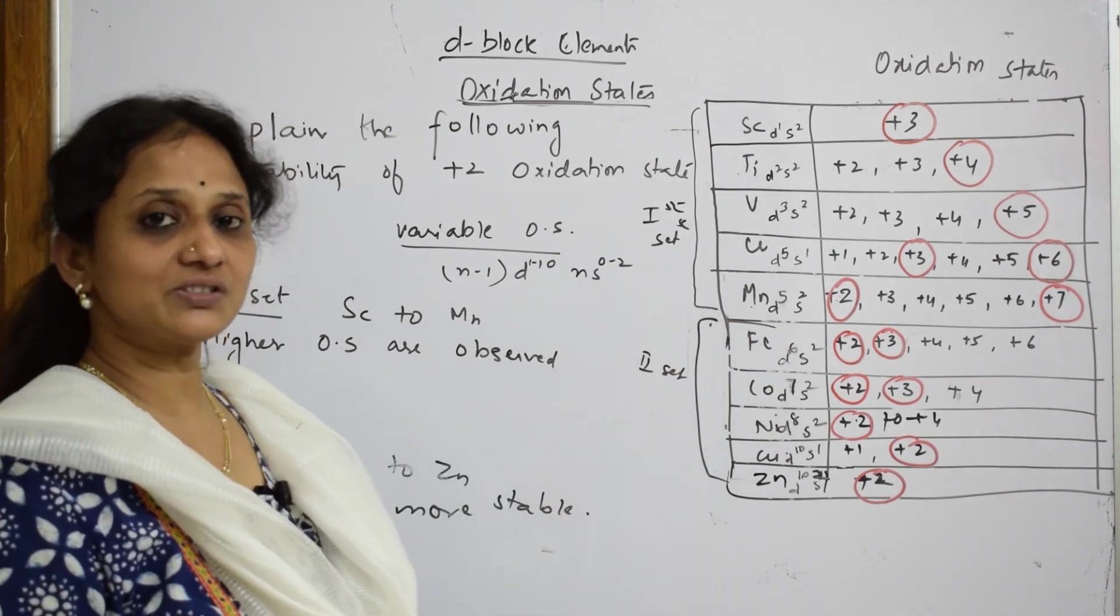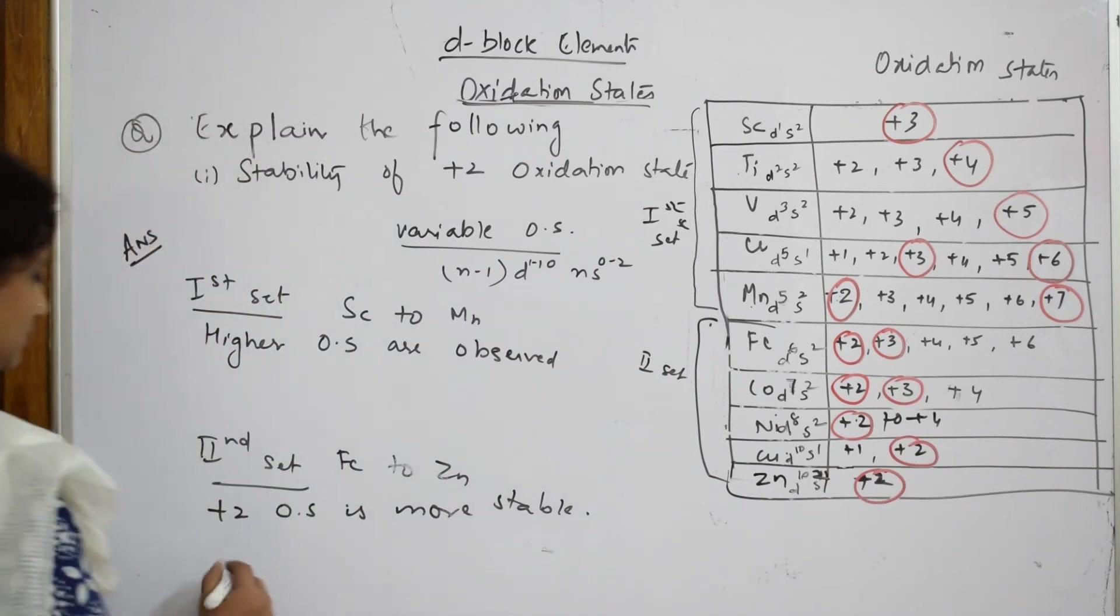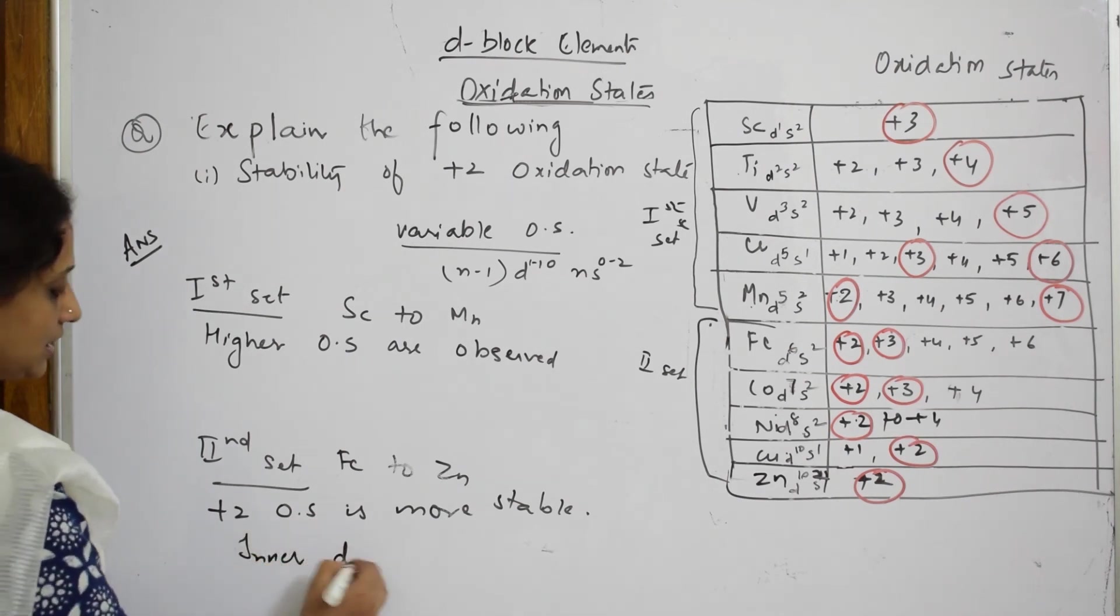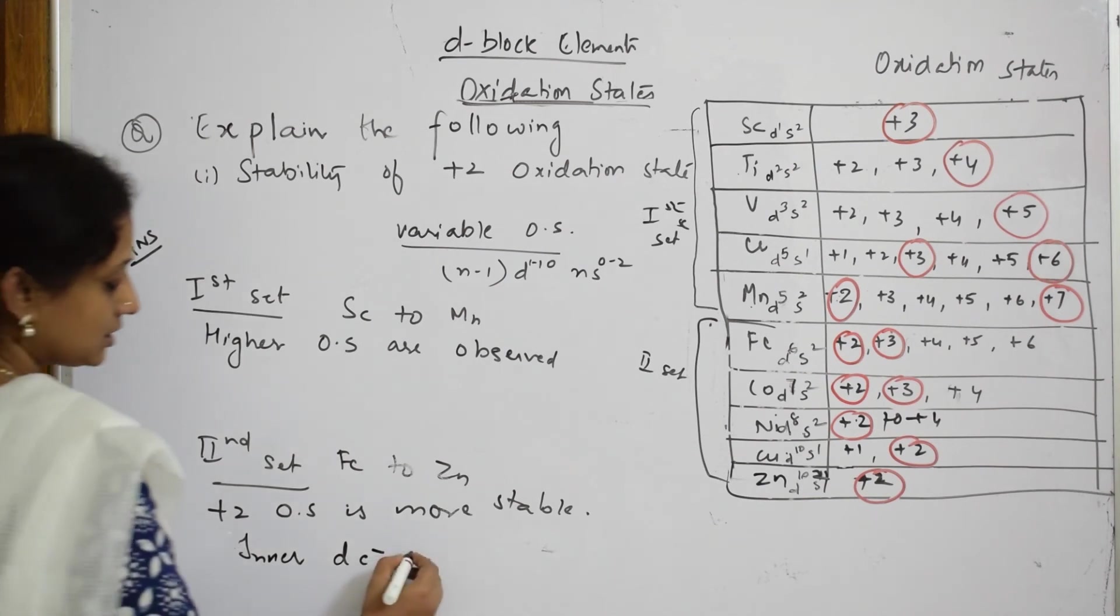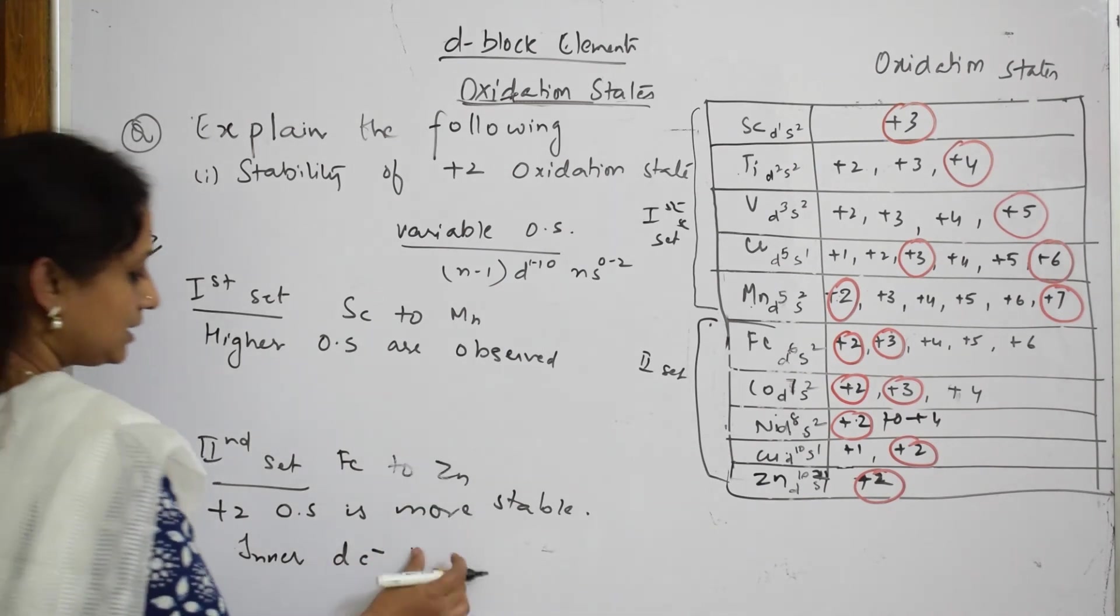All these I am going to explain when in d-block element when I go from left to right, the +2 oxidation state becomes prominent. Why? Because of the inner d electrons which are pulled by the nucleus.